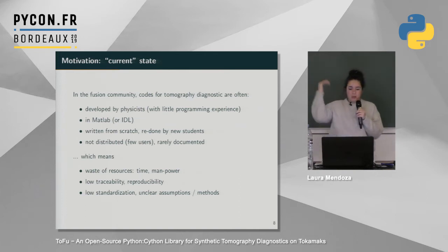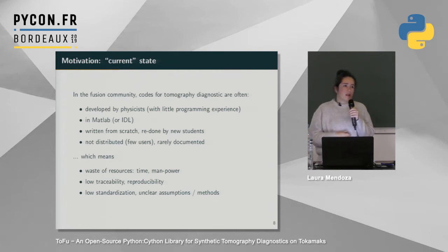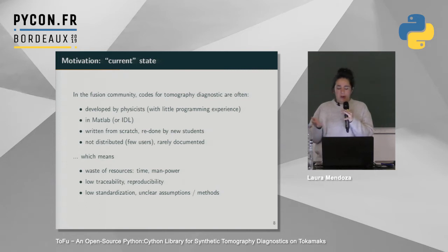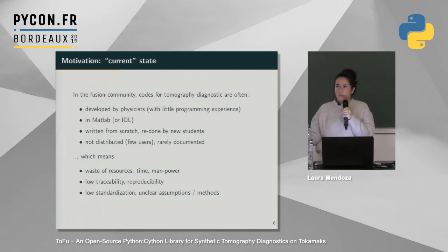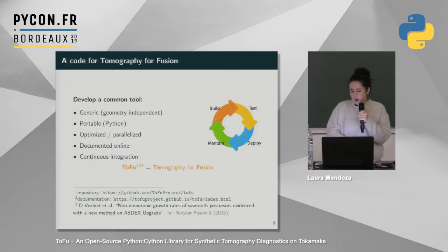On top of all this, in the community there is no DevOps philosophy. What typically happens: a PhD student who needs tomography diagnostics starts from zero, probably has never coded before, does it alone in MATLAB, and at the end of his PhD publishes one or two papers without ever sharing the source code. Then he moves on to a postdoc and we never know if the results were accurate. Every new PhD or postdoc on a new machine has to start again from zero, possibly getting similar results or not — we never know.